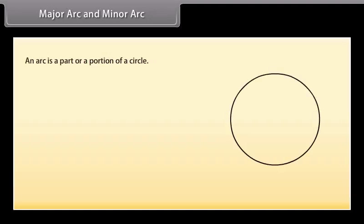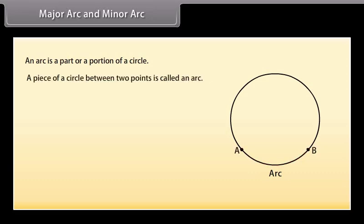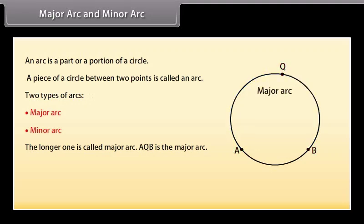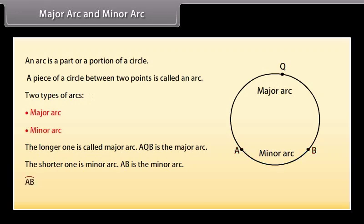Major arc and minor arc. Look at this figure — this is an arc. An arc is a part or portion of a circle. A piece of a circle between two points is called an arc. There are two types of arcs: the major arc and the minor arc. The longer one is called the major arc — here AQB is the major arc. The shorter one is the minor arc — AB is the minor arc. The arc is denoted by a special sign.